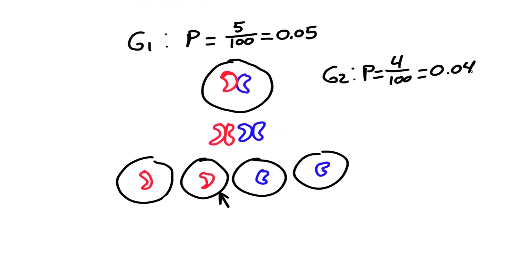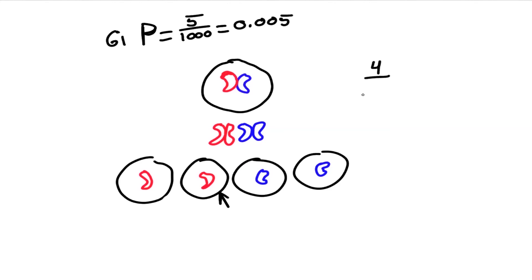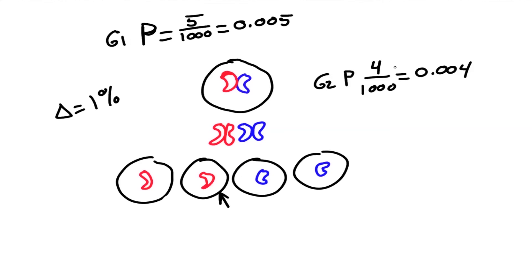Now instead of 50 individuals, imagine 500 individuals in the population — five dominant alleles out of 1,000, giving an allelic frequency of 0.005 or 0.5%. The same event happens: the heterozygous individual has one child that only got the recessive allele. The next generation has four dominant alleles out of 1,000, giving a frequency of 0.004 — a difference of only 0.1%. This shows that the larger the population, the less random chance can affect allelic frequencies.